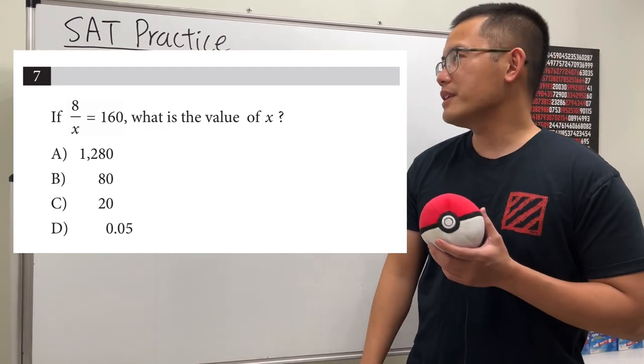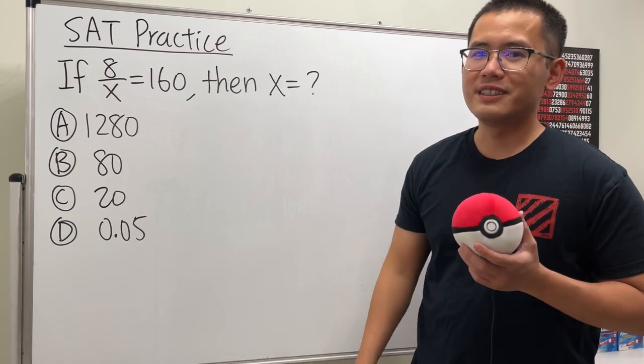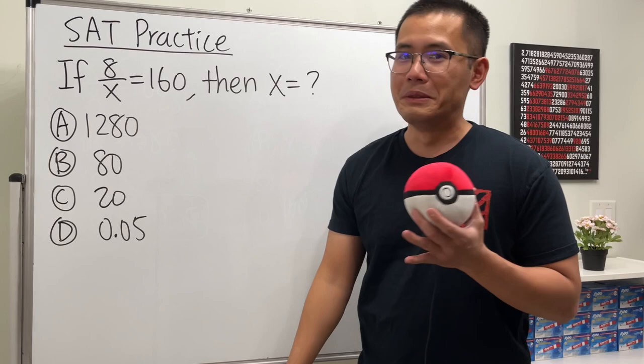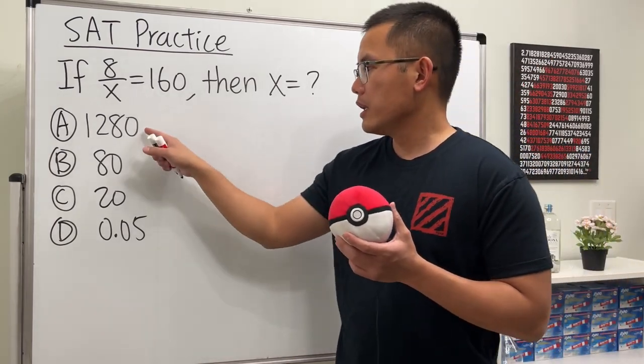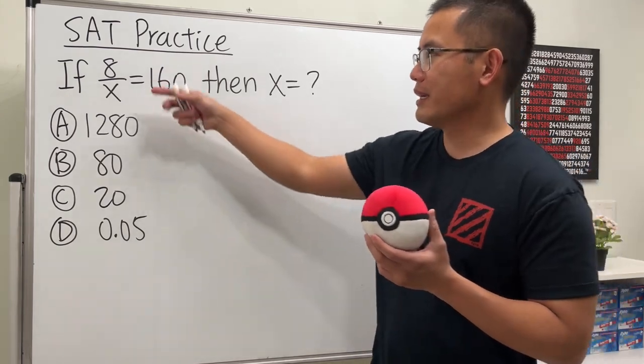All right, another SAT practice question. Here we have 8 over x is equal to 160 and we have to find out what x is. Well, the truth is you do not need to know how to solve this equation the math way because here are the candidates for x. All we have to do is just plug in and check.